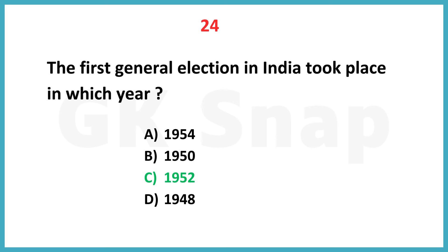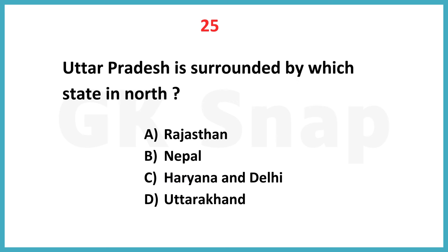The first general election in India took place in which year? Correct answer is option C: 1952. Uttar Pradesh is surrounded by which state in the north? Correct answer is option D: Uttarakhand.